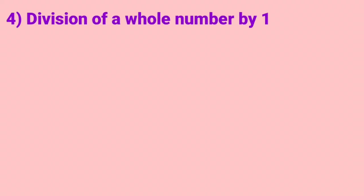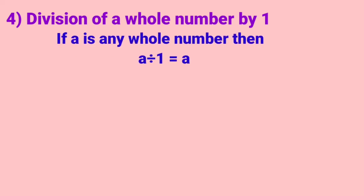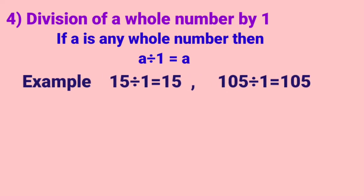Next we have division of a whole number by 1. If A is any whole number, then A divided by 1 will be A only. That means any number when divided by 1, the result is the number itself. For example, 15 divided by 1 it is 15. 105 divided by 1 it is 105.